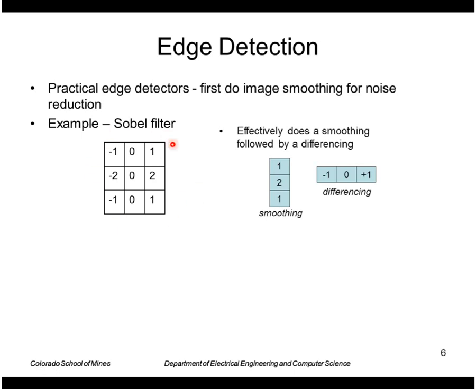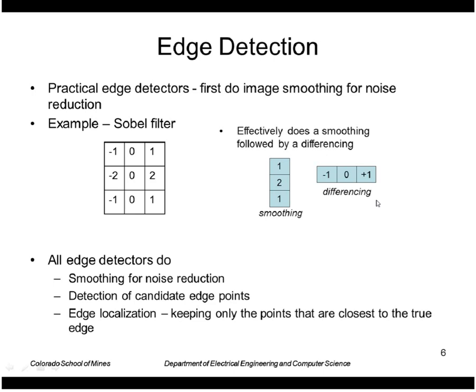The Sobel is an example of this. This is the standard Sobel filter for x derivative. It effectively does a smoothing like this followed by a differencing. So all edge detectors do smoothing prior to differentiation. Then we detect candidate edge points and localize the points.